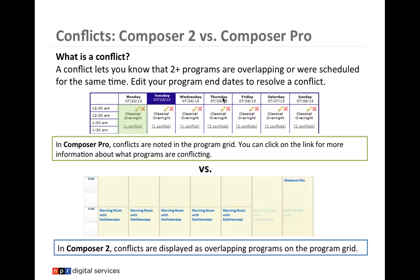Another aspect of program management is handling conflicts — when two programs are scheduled for the same time. In Composer 2, conflicts are displayed as overlapping programs with an exclamation point indicator. Click the exclamation point to see which programs are conflicting. Usually, a program just needs an end date because it stopped airing but was never given one, and a new program is now in that space.